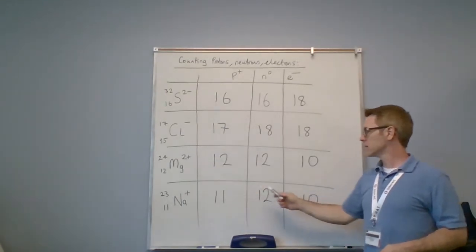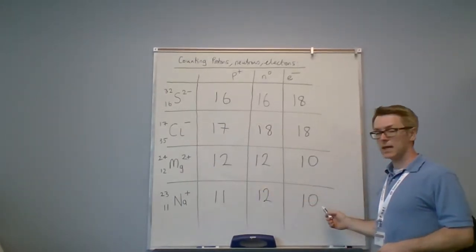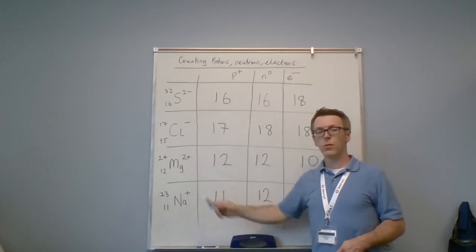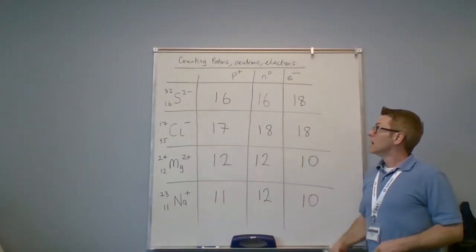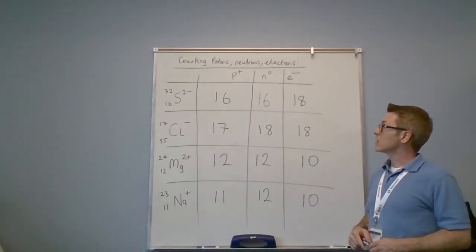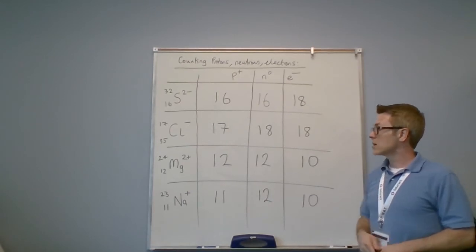11 protons, or 11 positives, and 10 negatives gives you net one positive. This is how you count protons, neutrons, and electrons for charged atoms.